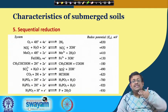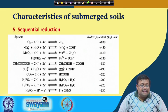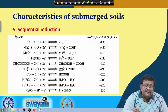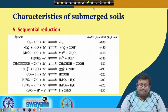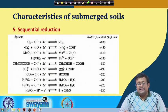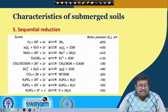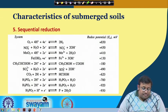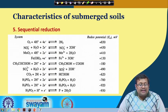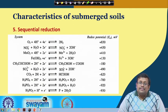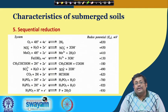In submerged soils, sequential reduction of different species occurs. All the different species are reduced to their reduced forms, and their redox potential decreases from +830 to −930 mV. Oxygen first reacts with protons and electrons, then nitrate reduces to nitrite, manganese oxide reduces to Mn²⁺, ferric hydroxide reduces to ferrous, and so on. This sequential reduction occurs with submergence, simultaneously accompanied by a decrease in redox potential.